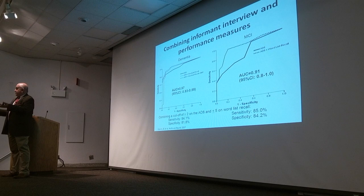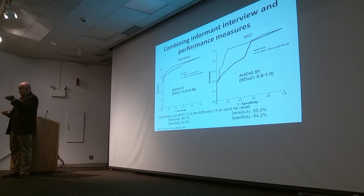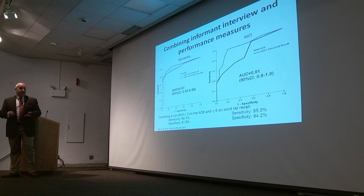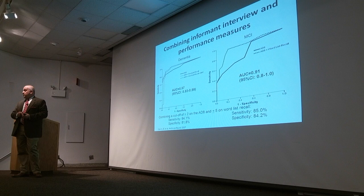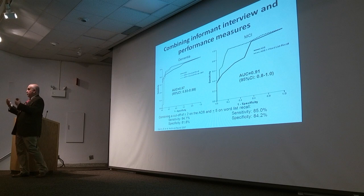I'm not discounting pencil-and-paper tests — it's valuable to see how people perform. But if we combine an informant interview with a brief performance test, can we improve our ability to pick up disease? In fact, we can. Combining the AD8 with a word recall task, we've correctly discriminated about 97% of individuals against the gold standard, and MCI about 91% — very powerful tools using very brief tests, tapping different aspects of cognitive impairment.